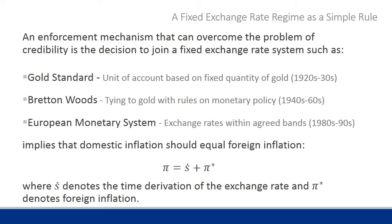We have some examples of fixed exchange rate systems that we could use as an enforcement mechanism. The gold standard from the 1920s gave every unit of currency a valuation in terms of gold, and this fixed the exchange rates between them. Bretton Woods was a similar exchange rate system using gold but also with rules on monetary policy applied to all members. More recently we had the European Monetary System where exchange rates were able to move within certain bands, and the UK came out of the European Exchange Rate Mechanism in 1992.